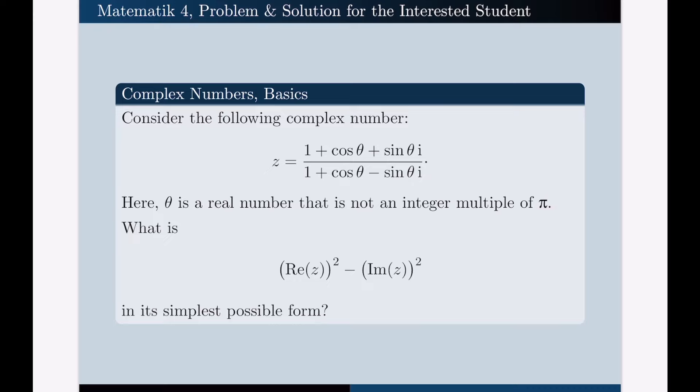The reason is clear: if theta is an integer multiple of pi, then sine theta is 0, cosine theta is minus 1, and it means that the denominator vanishes, which is not, of course, possible.